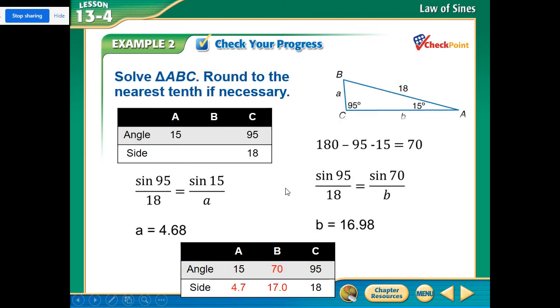So let's try another one. So here we want to find A, B, and C again. So these are the three that are given. And notice we do have a pair here, which is great. So that pair is very important for us. So then to find out what A is here, we can do sine of 95 over 18 equals sine of 15. And we can cross multiply and A ends up being 4.68.